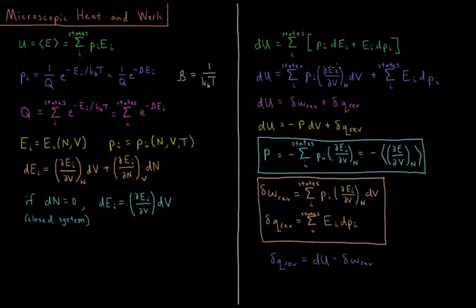Examining the structure of these equations, our change in internal energy has the form: something times dV plus another term — matching the statistical mechanics expression. This implies that the pressure of an ideal gas from statistical mechanics equals the negative sum over all states of the probability times the partial derivative of the energy of that state with respect to volume, or equivalently the negative expectation value of ∂Ei/∂V at constant N.